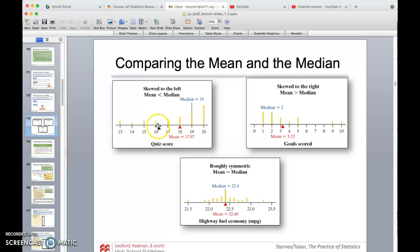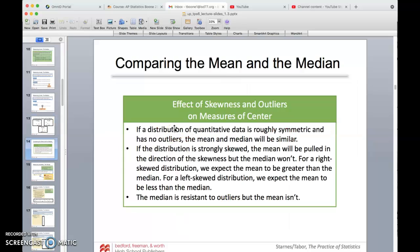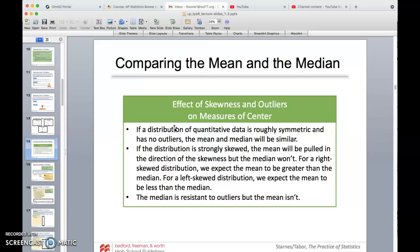As we highlight that, some things that we have here is that if it's roughly symmetric, the mean and median will be similar. If it's strongly skewed, the mean will be pulled in the direction of the skewness. If it's skewed right, we expect the mean to be greater than the median. If it's skewed left, we expect the mean to be less than that. Remember that that median, we use that a lot of times because it is resistant to outliers, but the mean is not. That's the downfall of the mean.